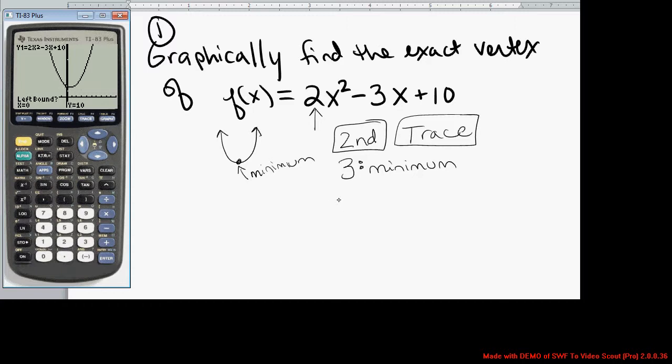When you select option 3, the calculator is going to ask you three questions. The first question it asks is left bound. Remember, your vertex that you're trying to find is here at the bottom of the graph. Left bound means the left side of that vertex. It wants you to move your cursor to the left side of it. So I hit the left arrow button until I'm clearly on the left side of it and press enter.